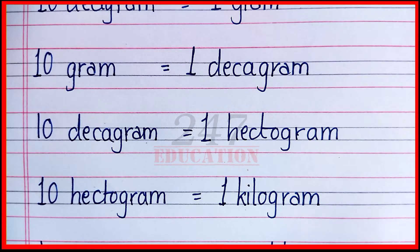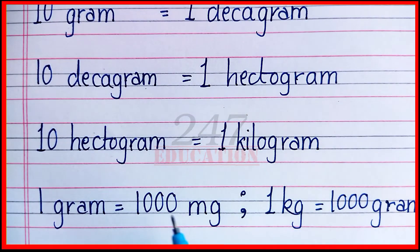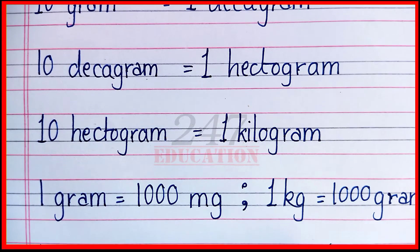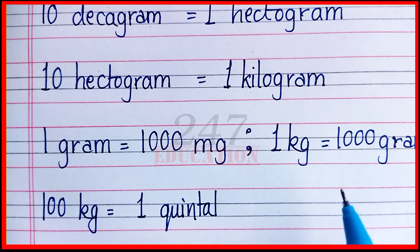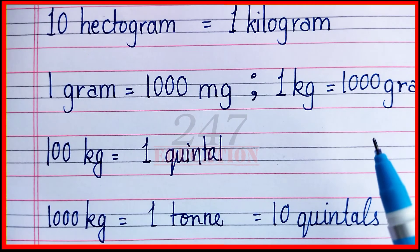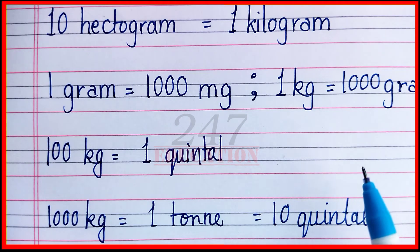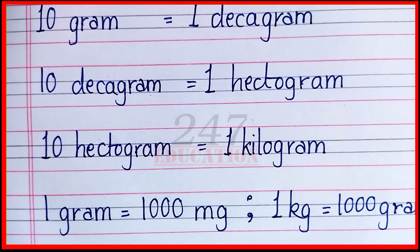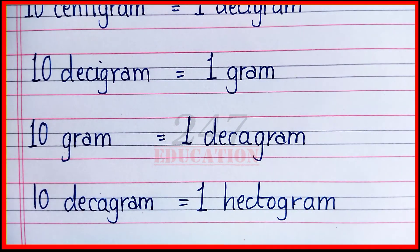10 hectogram equal to 1 kilogram. 100 kilogram equal to 1 quintal. 1 ton equal to 10 quintals. So this is the measure of weight. Thank you.